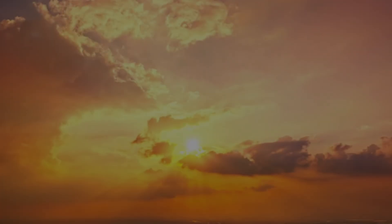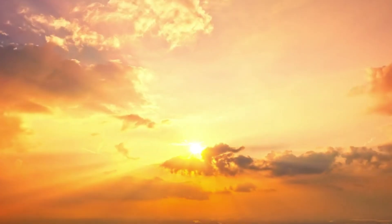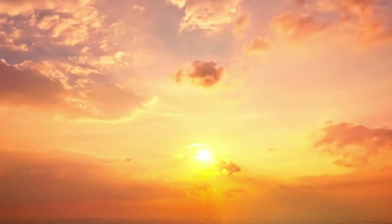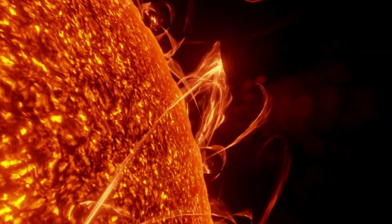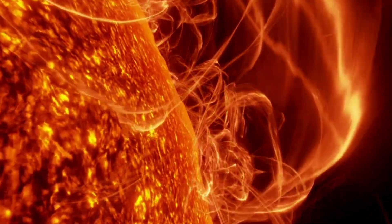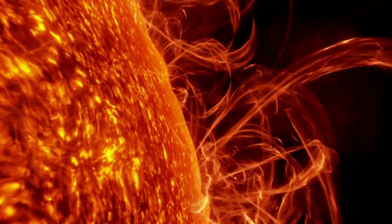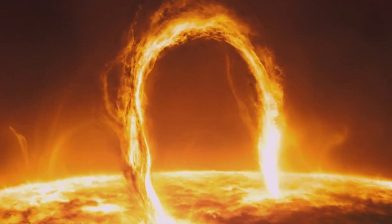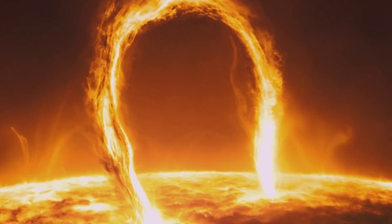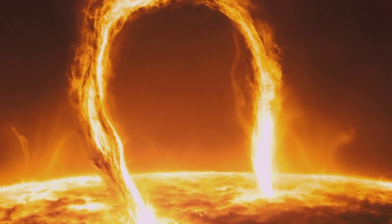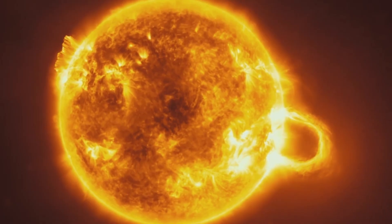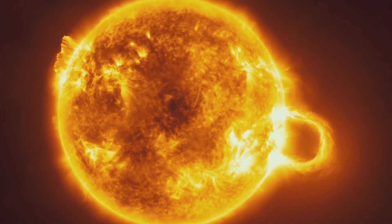The sun might look calm from 93 million miles away, but don't be fooled. It's kind of a drama queen. Beneath that glowing surface, it's constantly boiling with energy. And every now and then, it loses it. We're talking massive solar flares, huge bursts of energy unleashed when tangled magnetic field lines snap and reconnect. These flares are the most powerful explosions in our entire solar system.